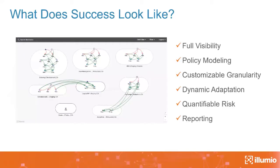To tie this off, key elements for a successful segmentation strategy: full visibility, because you can't protect what you can't see; policy modeling to avoid breaking applications during enforcement; customizable granularity so policies can extend to any business or compliance requirement consistently across environments; dynamic adaptation, because manual efforts are doomed to fail especially in the cloud; quantifiable risk so you're audit-ready; and reporting so you have a real-time account of policy management rather than a point-in-time exercise. Think about not just the environments and requirements you have today, but how these will change to future-proof your needs. Thanks so much for your time today — I hope it's been helpful and ignited your enthusiasm for Zero Trust.